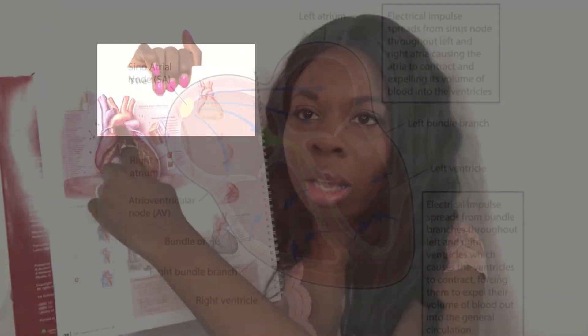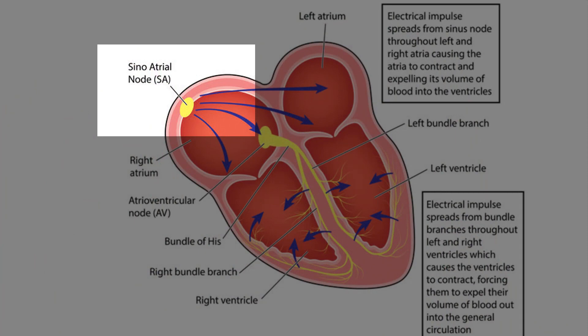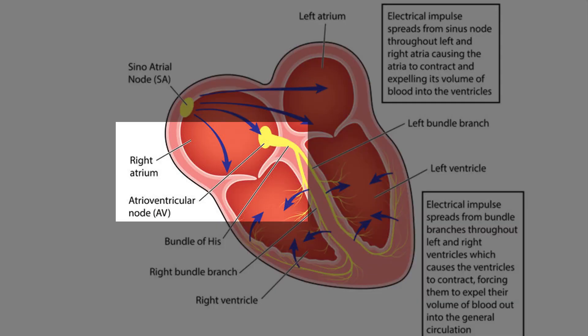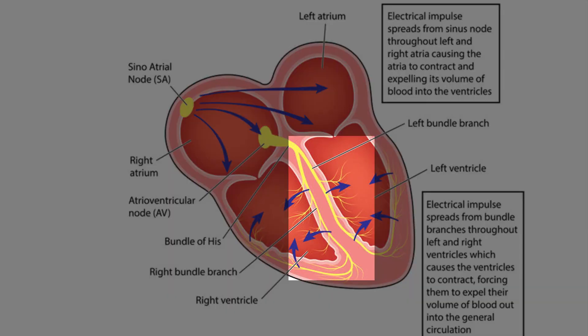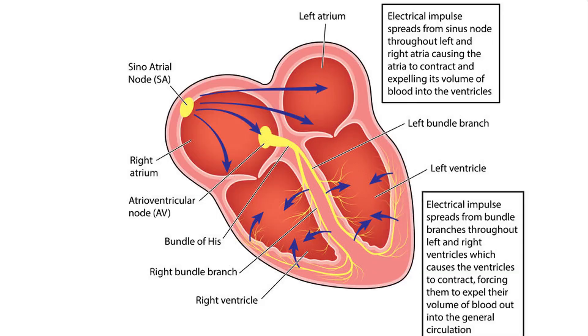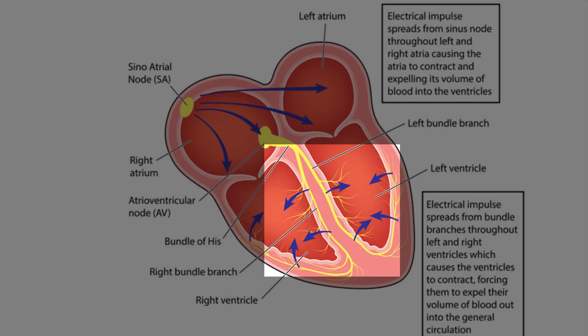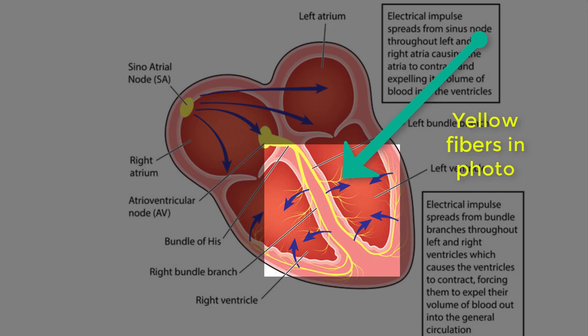Let me describe what each of those things are. They're not easily seen with the naked eye — they're very microscopic. The SA node is located on top of the atrium, the AV node is located on top of the ventricles, the bundle of His is in the space between the left and right ventricles, and the Purkinje fibers are fibers that extend throughout the ventricles.